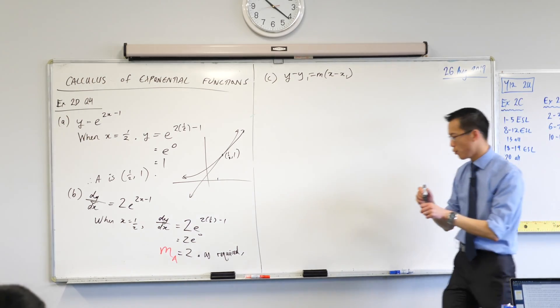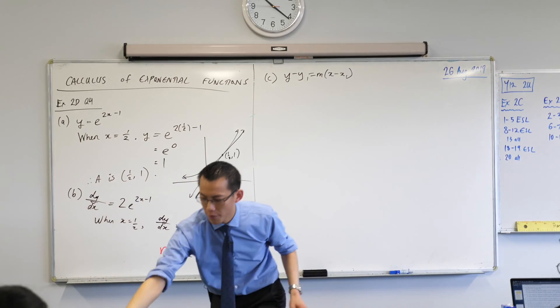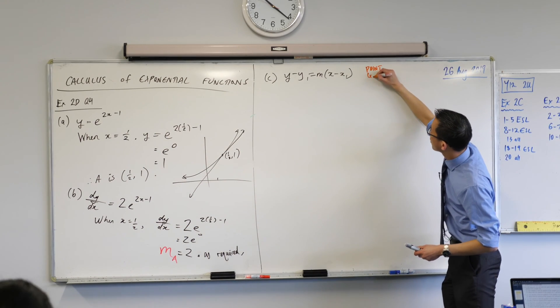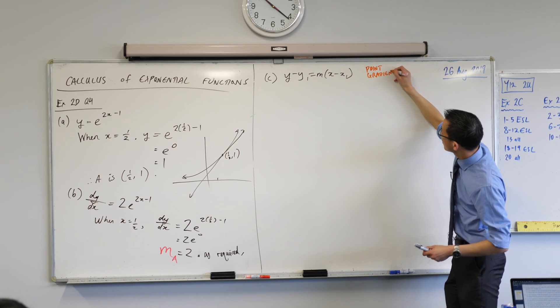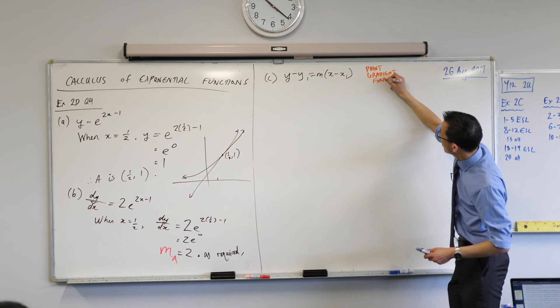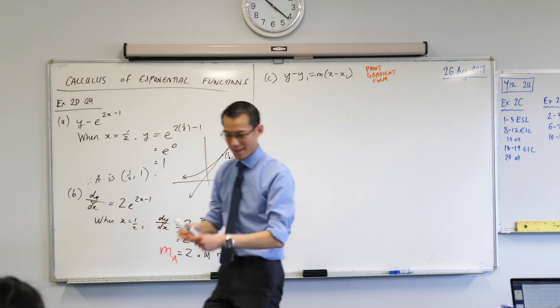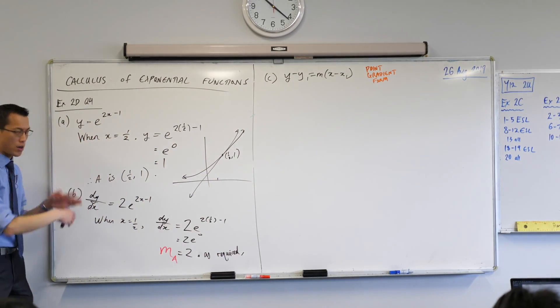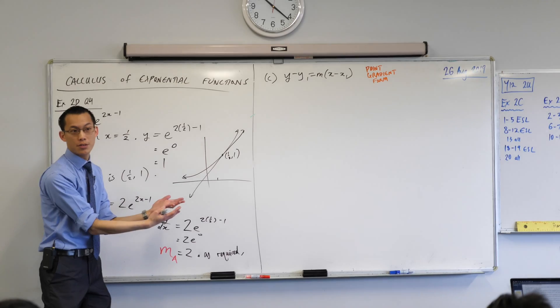If you want to maybe put for yourself a little reminder, because this is something we're calling on from our coordinate geometry knowledge. This is point gradient form of a straight line. And all I need to do is take all the information I developed in the earlier parts of the question and appropriately substitute them in.